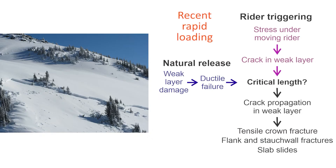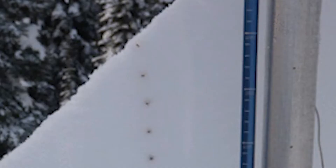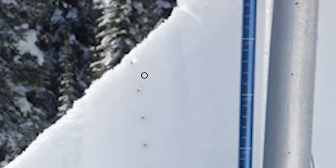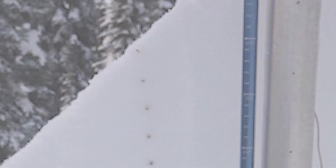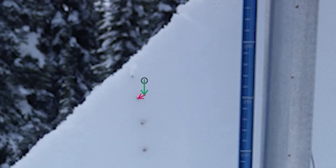Rapid loading can shorten the critical crack length and consequently make natural and rider-triggered dry slab avalanches more likely. But for natural slab avalanches, how does the crack or initial failure in the weak layer form? Let's start with creep on an avalanche slope. This clip shows two hours of fluffy snow creeping in a few seconds. Watch the dot that starts inside the circle. Creep consists of settlement, shown by the green arrow, and shear, shown by the red arrow.